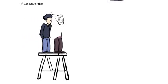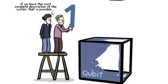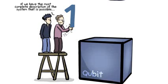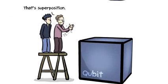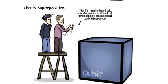But if we have the most complete description of the system that is possible, compatible with quantum physics, like when I prepared the state and when we opened door number two, we don't know whether it was a zero or a one. But that's superposition, because that's really intrinsic randomness instead of probability associated with ignorance.